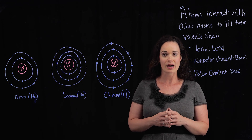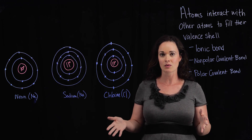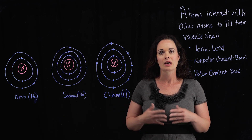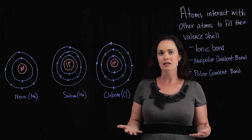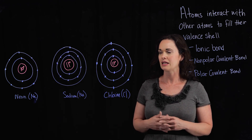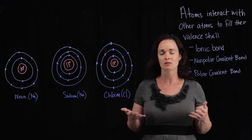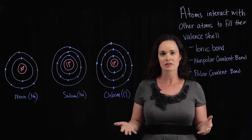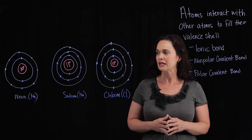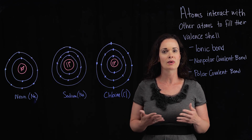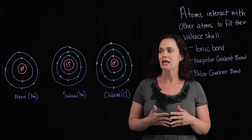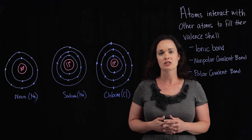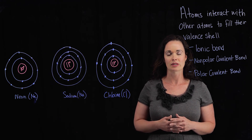I'm going to start this video with a question for you. I've drawn up some different atoms here. I want you to take a look at them and decide which of these are stable and which are not. Go ahead and pause your video and use what you've learned about electron assignment and the valence shell to predict which atoms will be stable and which will not.